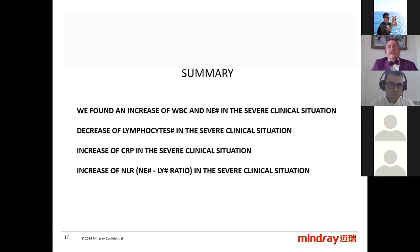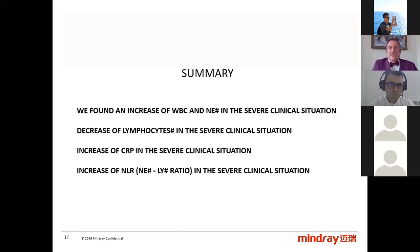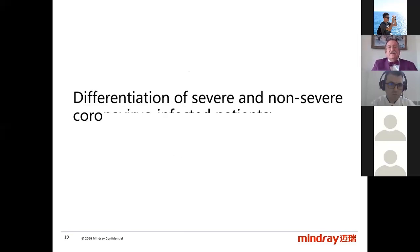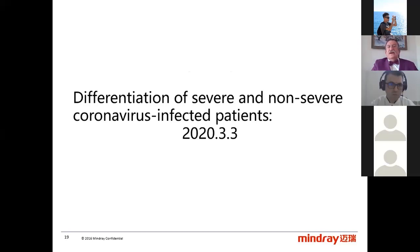In summary, we found an increase of white blood cells and neutrophils in the severe clinical situation, a decrease of lymphocytes in absolute number in the severe clinical situation, an increase of CRP, and an increase of NLR in the severe clinical situation. The second evaluation was in the same hospital — the GSI hospital — where we tried to differentiate severe from non-severe coronavirus-infected patients.